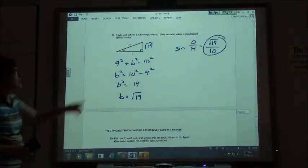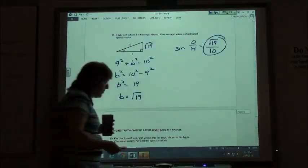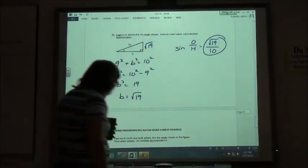So just using our Pythagorean theorem to find our missing side, and then doing our angle, sine, cosine, tangent, whatever they might ask for.